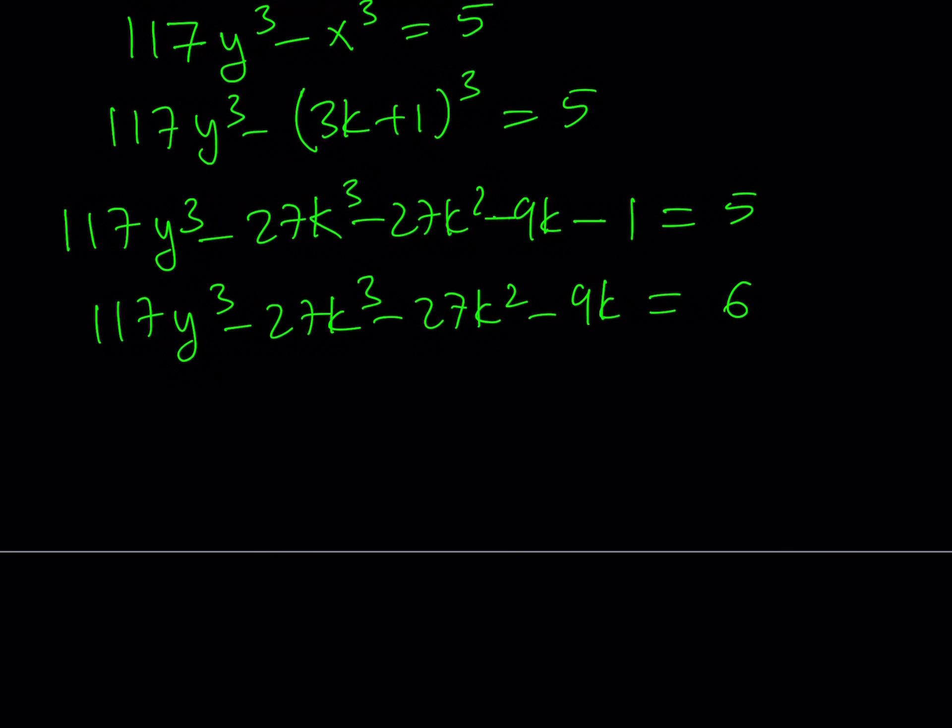Now, notice that everything is divisible by 3. So, you can kind of divide everything by 3. That's going to give you 39y³ - 9k³ - 9k² - 3k = 2.